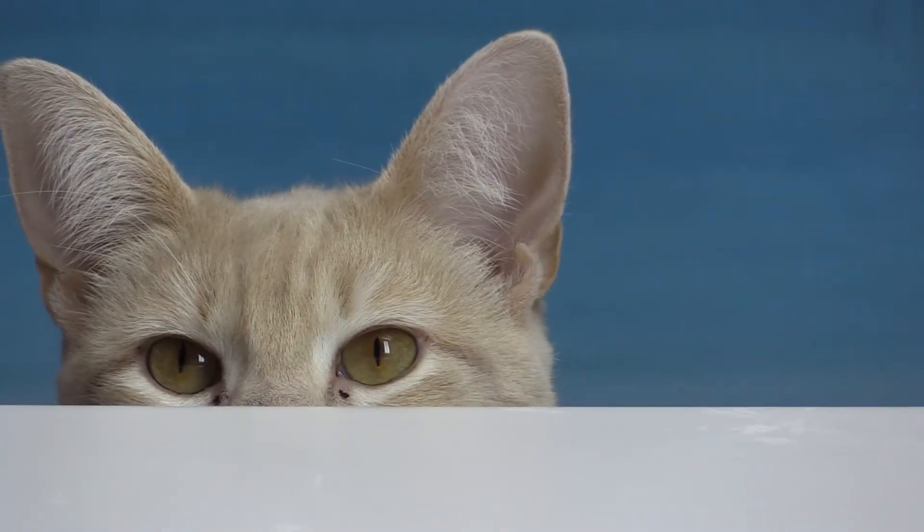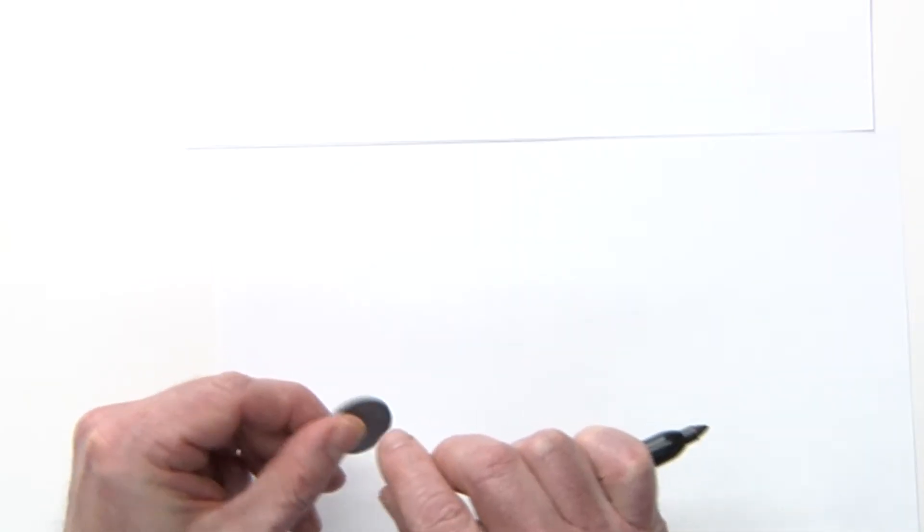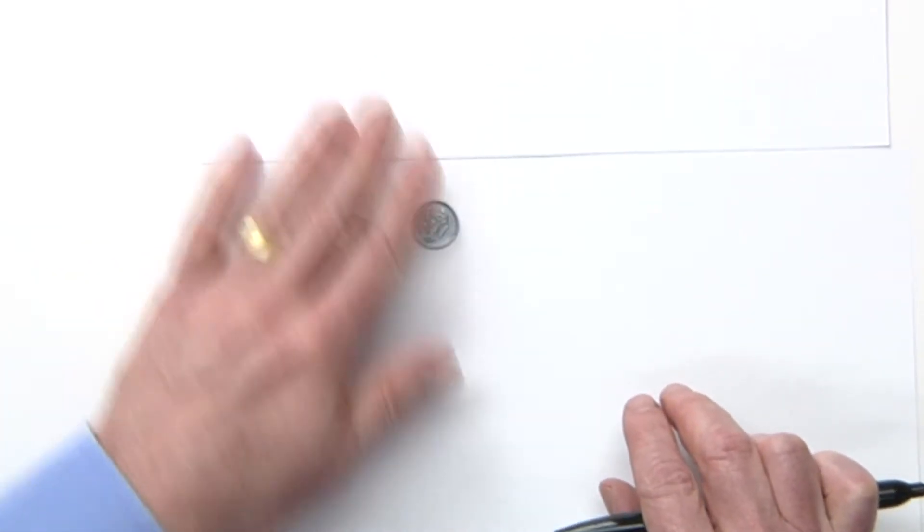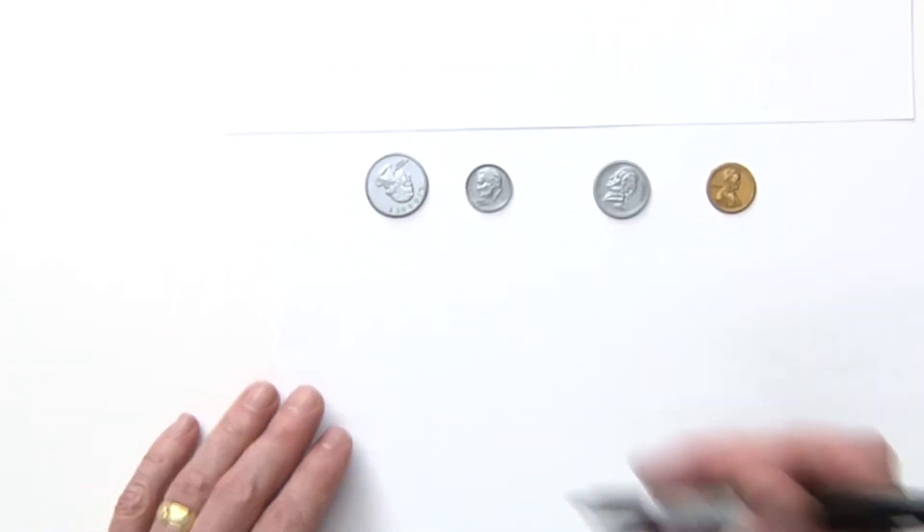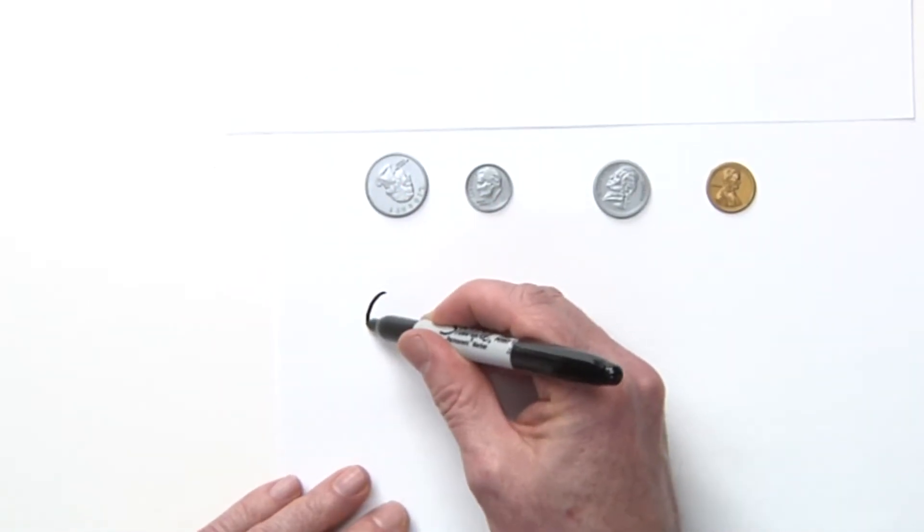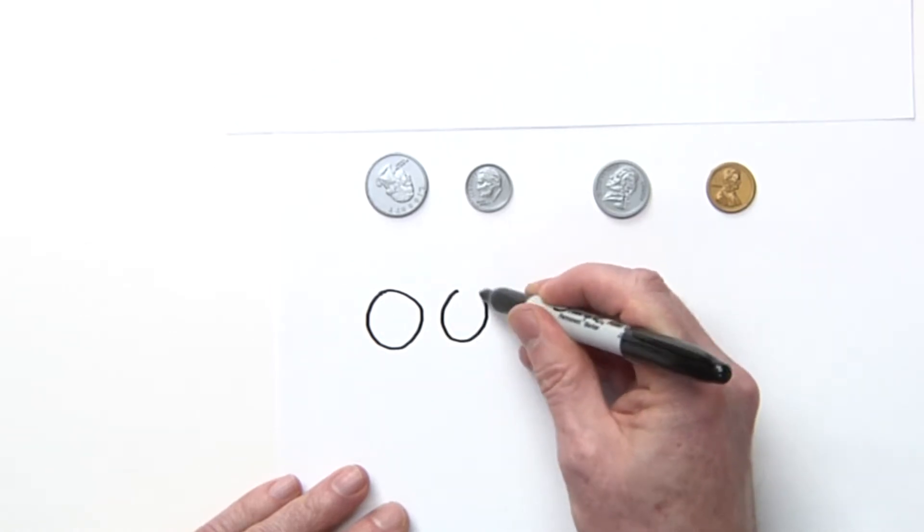Get to know your coins: what a quarter looks like from the front and the back, what a dime looks like from the front and the back, and a penny, because in some of the books you might just have some circles like this.